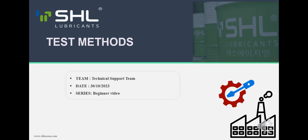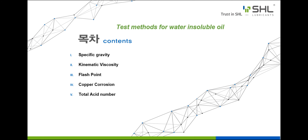Due to limited time, we will only present the purpose of testing each technical parameter for each testing method. The testing process part is expected to be referenced in the section presented on the slide. First, we would like to introduce five typical testing methods for water-insoluble oil: specific gravity, kinematic viscosity, flashpoint, copper corrosion, and total acid number.